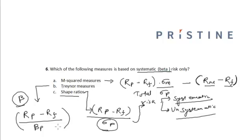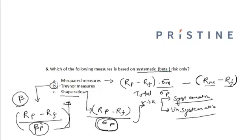In the denominator of the Sharpe ratio we use the standard deviation of the entire portfolio, whereas in the denominator of the Treynor measure we use the beta of the portfolio. Since beta measures only the systematic risk, the correct option is option B.